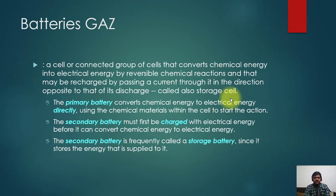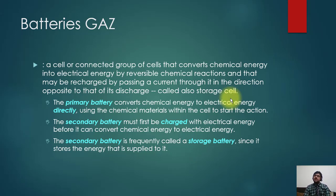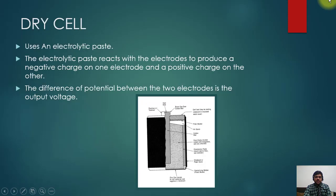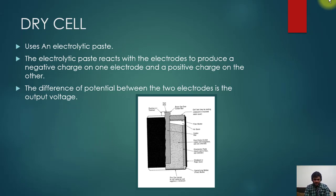Examples of primary batteries are dry cells and pencil cells that we commonly use. They have materials that start reacting and can be used once. The other type is rechargeable — you connect an electrical energy supply to the battery, it charges, and then you can discharge it. Primary batteries like dry cells use an electrolyte paste. The electrolyte paste reacts with the electrodes to produce a negative charge on one electrode and a positive charge on the other.